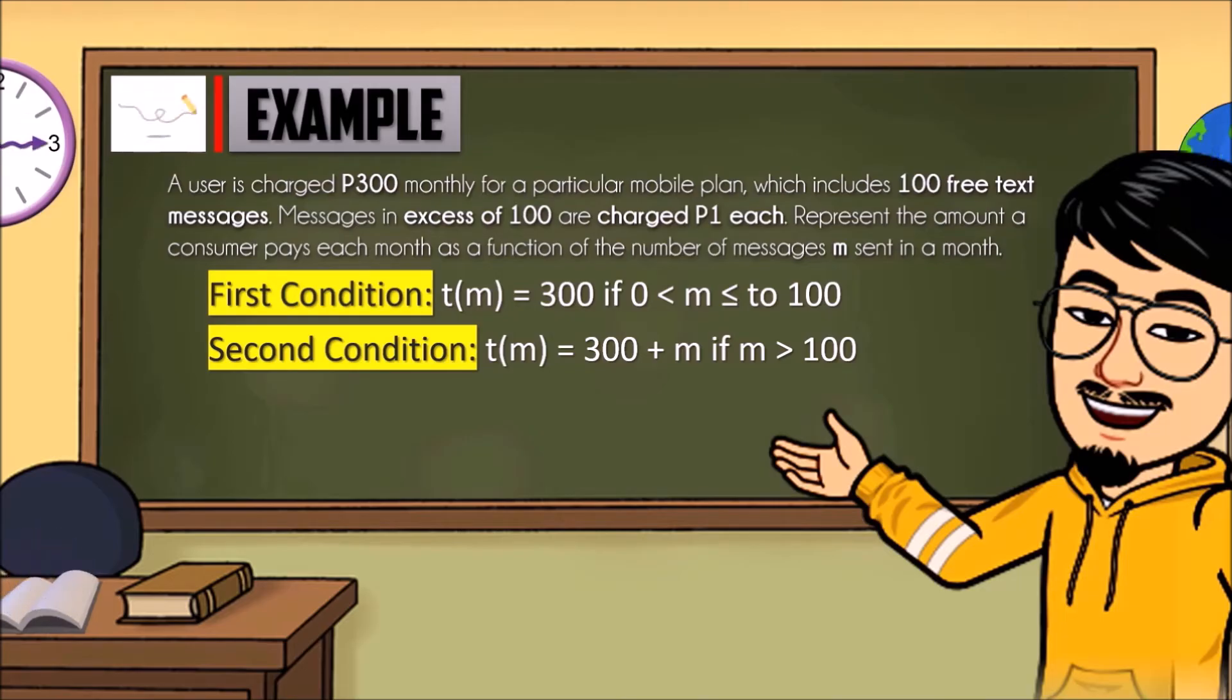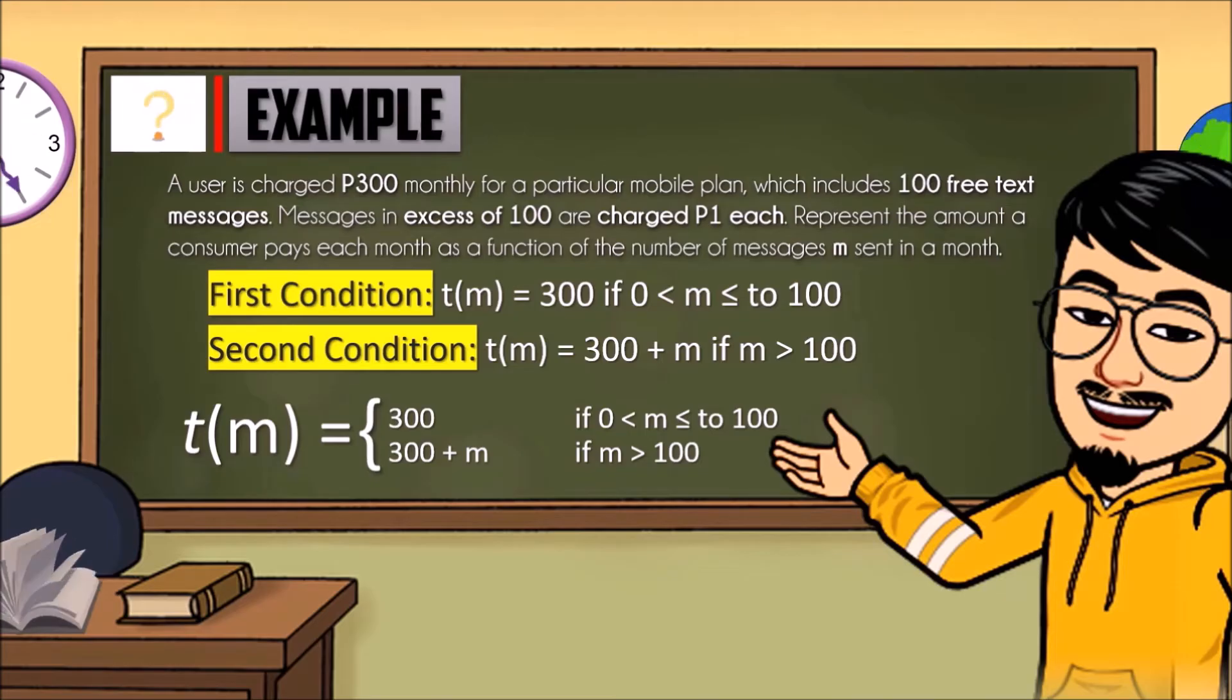When we make it a piecewise function, this is it: T of M equals 300 if M is less than or equal to 100, then 300 plus M if messages are greater than 100.